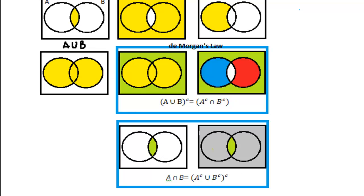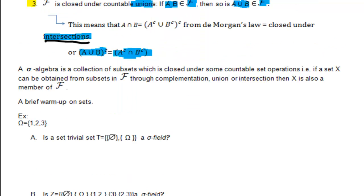So now we have our warm-up with sets behind us and we can go do some exercises with sigma algebra. We are given here our omega, which is our universe of outcomes — listing all possible outcomes that our experiment can have. We are told that omega is made of 1, 2, and 3.